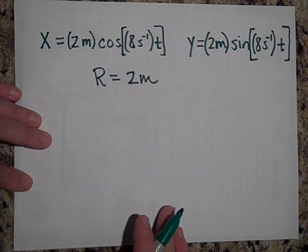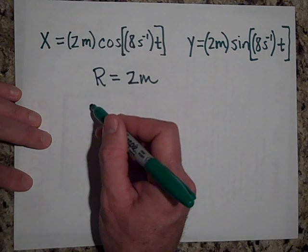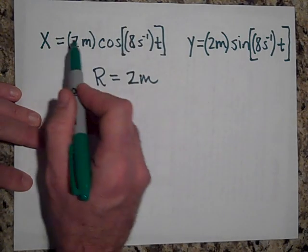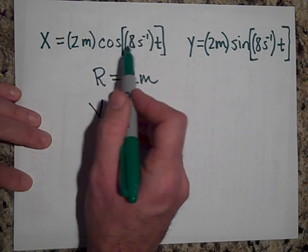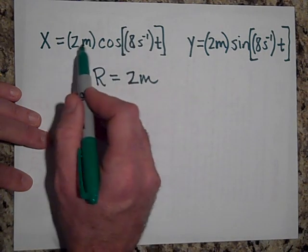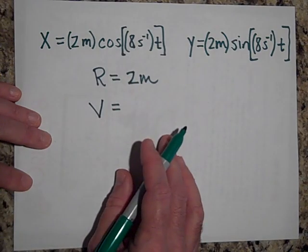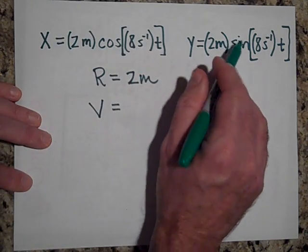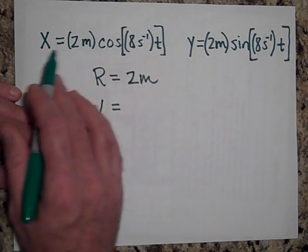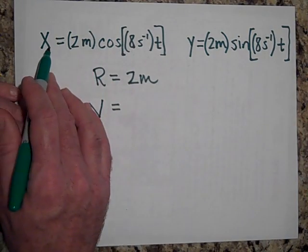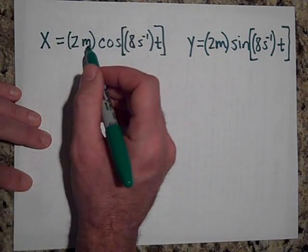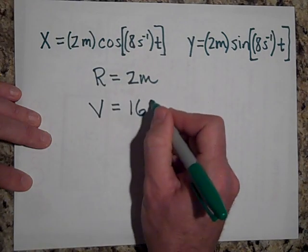Could you tell me what the speed of this circular motion would be? If you take the first derivative of the x-position, that gives you the speed in the x-direction. When the speed is completely in the x-direction, it has no speed in the y-direction, so that v_max in x equals the object's speed in circular motion. That would be 8 times 2, which is 16 meters per second.